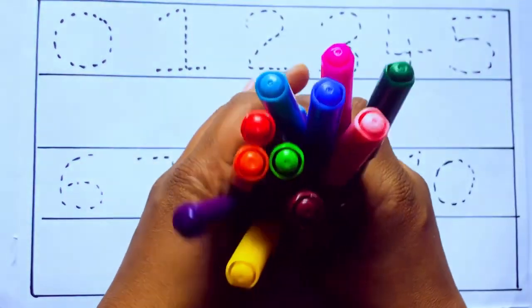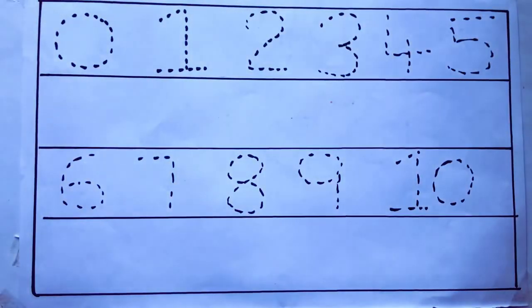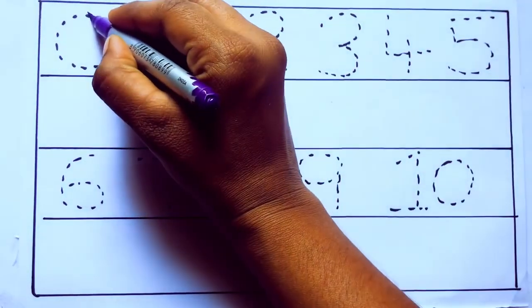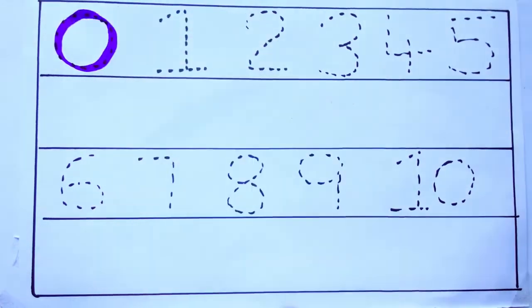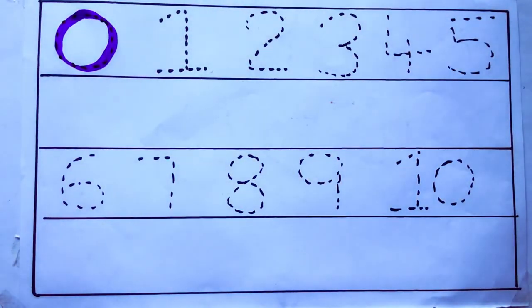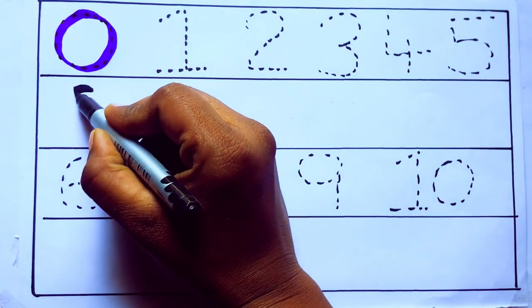And pink color. Let's draw numbers. Violet color 0, Z-E-R-O. Violet color 0.